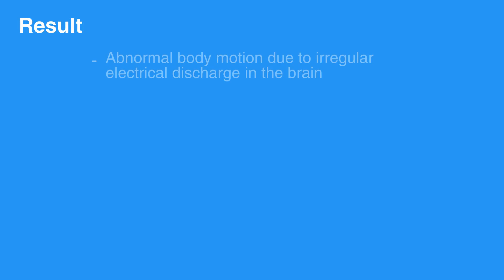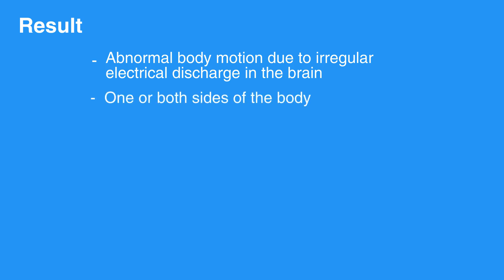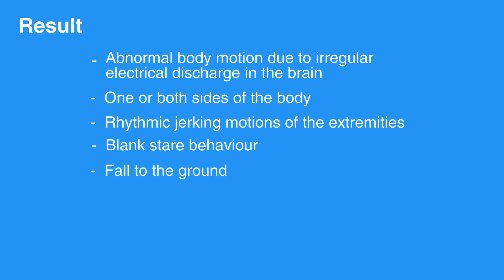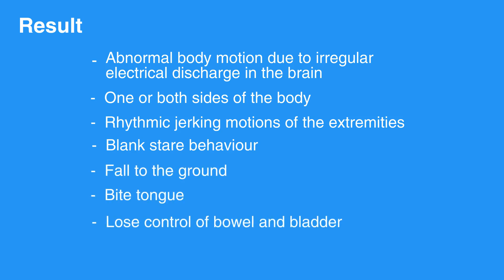Seizures result in abnormal body motion due to an irregular electrical discharge in the brain. Seizures can involve one or both sides of the body. Many seizures result in rhythmic jerking motions, but some may result in a blank stare type of behavior. An individual having a seizure may fall to the ground, bite their tongue, lose control of their bowel and bladder, and are often accompanied by a brief period of unresponsiveness.